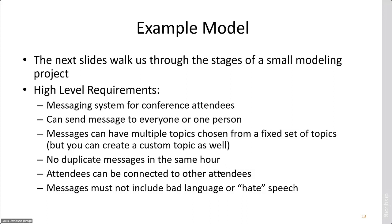We're going to build a messaging system for conference attendees. You can send a message to everyone or to one person. Messages can have multiple topics chosen from a fixed set, but you can also create custom topics. No duplicate messages in the same hour — implied to the same person from the same person. No attendees can be connected to other attendees, and messages must not include bad language or hate speech. That last requirement gets really complicated because one word is bad language in one context and an anatomical discussion in another. You may need AI, a person, or a voting system for that.